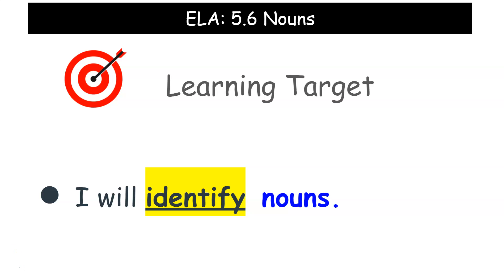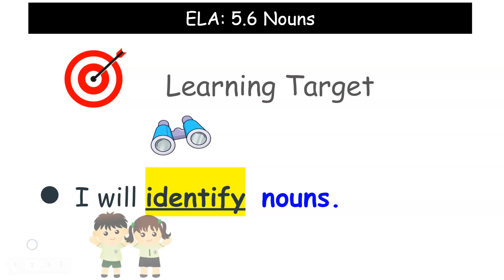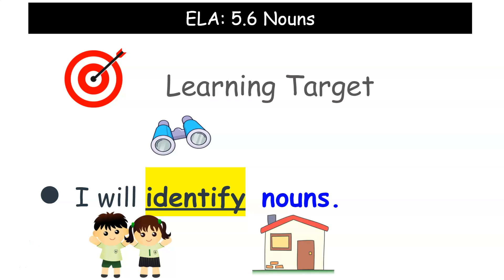Today's learning target: I will identify nouns. I will look for and find nouns. A person — so the boy and the girl are a noun. A place is a noun, so the house is a noun. Or a thing — this ice cream cone is a noun. So I'm going to look for and find nouns.